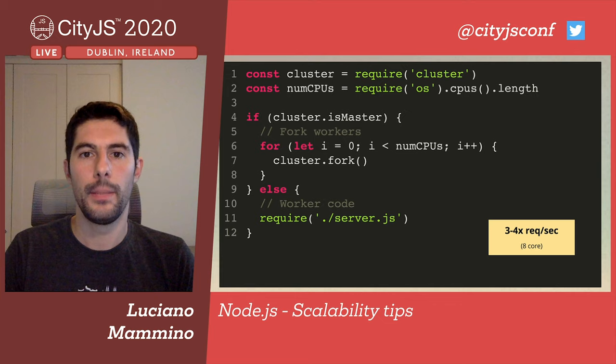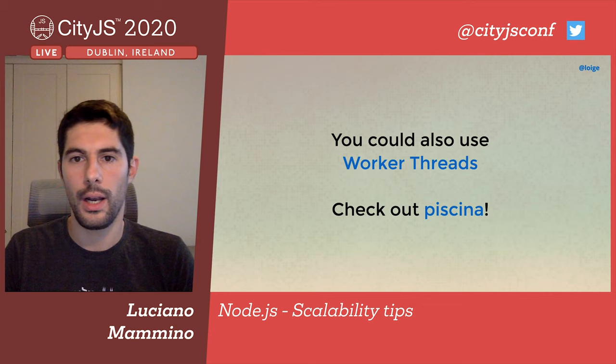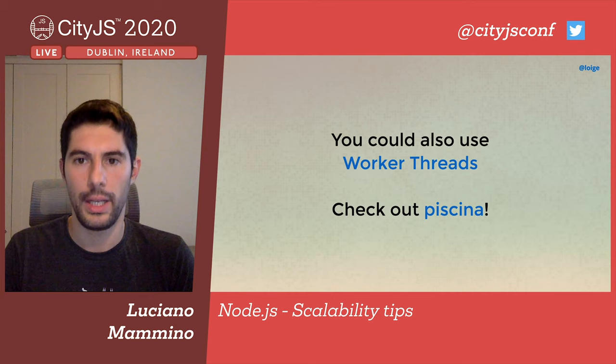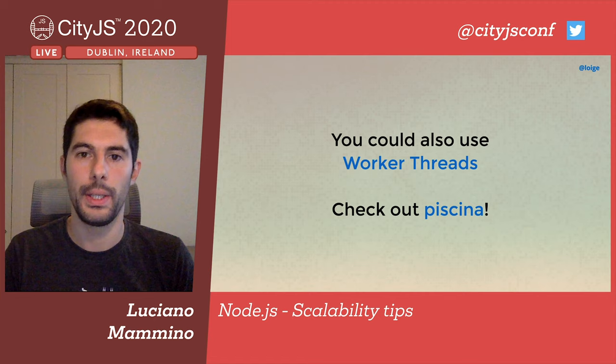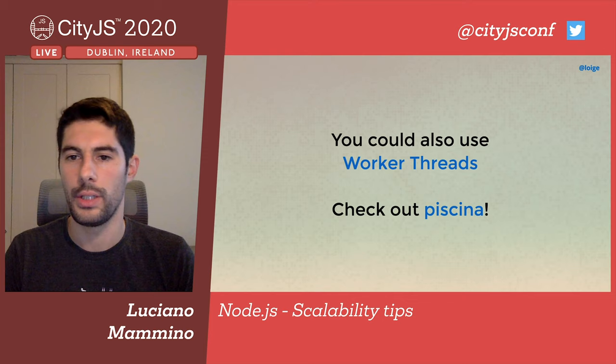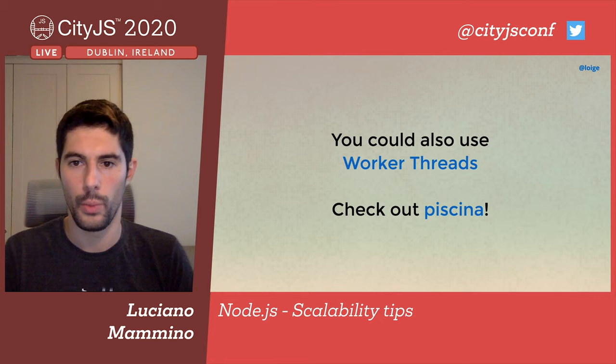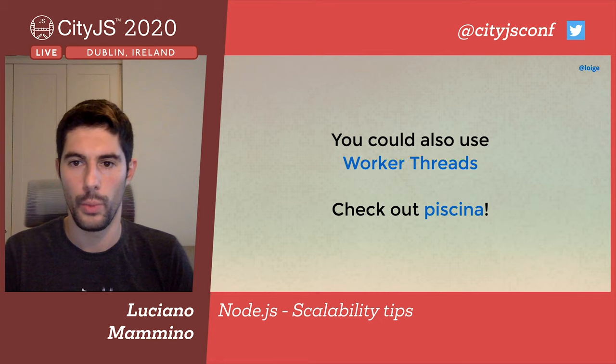This is not the only way — since Node 14 we can also use worker threads, which allow you to create real threads where you can even share memory between different threads. A library that stands out is Piscina, which implements patterns to spin up workers and distribute load between them. There's even an example similar to the web server scenario. Keep this library in mind and make sure to give worker threads a try with Node.js.